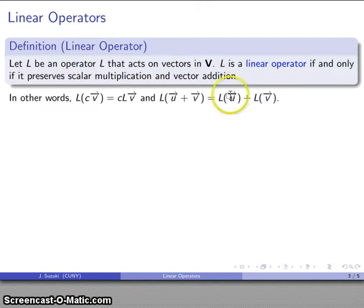What that means in particular: if I apply the operator to a scalar multiple of a vector, what I get is the scalar multiple of the linear operator applied to the vector. And if I have the linear operator applied to the sum of two vectors, it's going to give me the sum of the linear operators applied to the vectors individually.